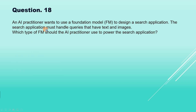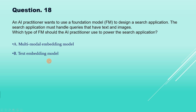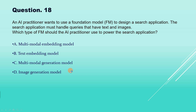Now question number 18. An AI practitioner wants to use a foundational model to design a search application. The search application must handle queries that have both text and images. Options: A, multimodal embedding model; B, text embedding model; C, multimodal generation model; D, image generation model. The correct answer is option A, multimodal embedding model, because it is specifically designed to process and understand various types of data including text and images, converting both into numerical representations so the model can compare and understand the relationship between them.